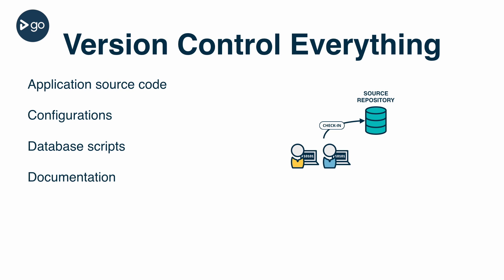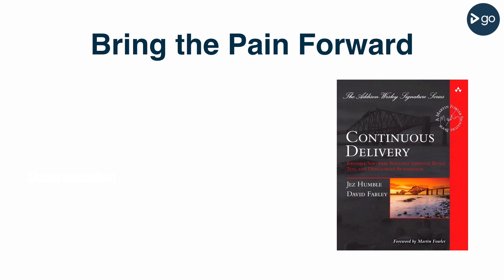Something rarely seen in source control is product documentation. As an important part of your user experience, it should be managed with the same rigor. It's natural to want to avoid pain, but you should fight the urge. As described in the book Continuous Delivery, you should do these things sooner and more often.